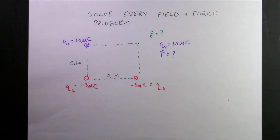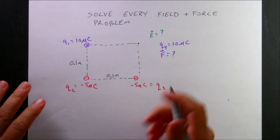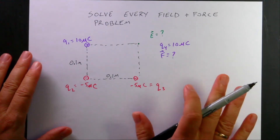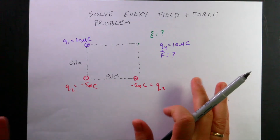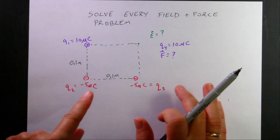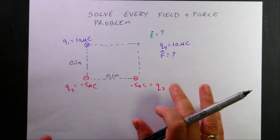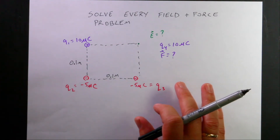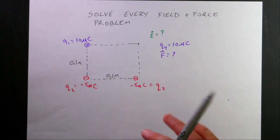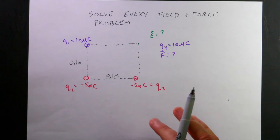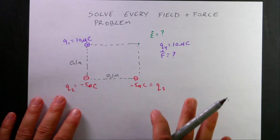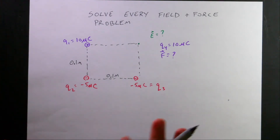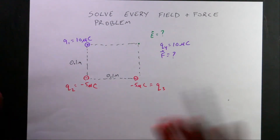In your physics textbook, there are a lot of problems that look very similar to this. Let me explain the problem, and then I'm going to explain how they want you to solve it, and then I'm going to show you how you should solve it, so you can solve all of these problems without them being very tedious and frustrating. We're going to use Python and vectors. It's way better than the way the book wants you to do it.